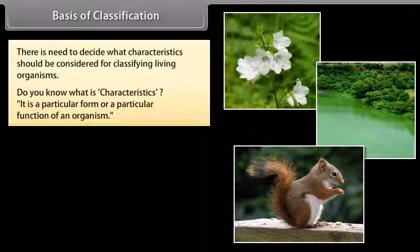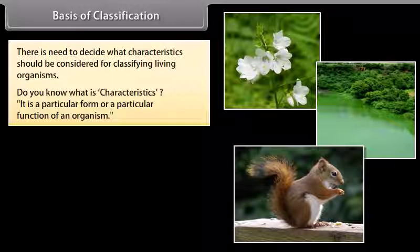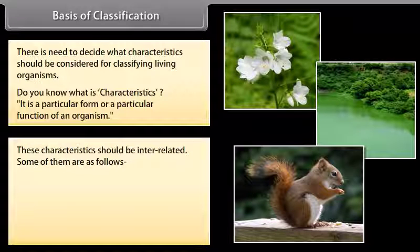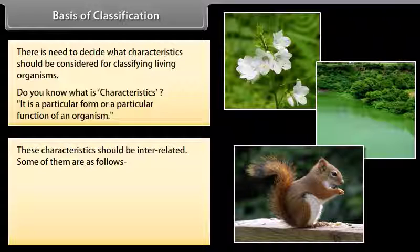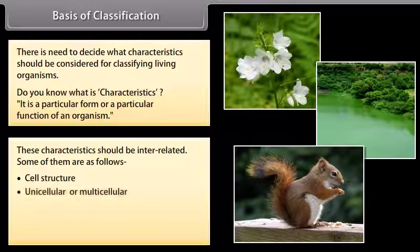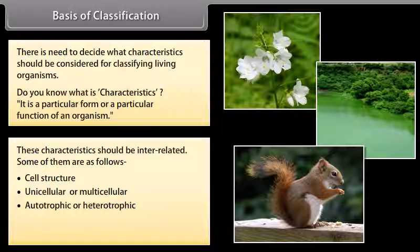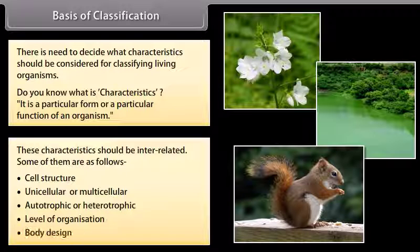A characteristic is a particular form or a particular function of an organism. These characteristics should be inter-related. Some of them are as follows: cell structure, unicellular or multicellular, autotrophic or heterotrophic, level of organization, and body design.